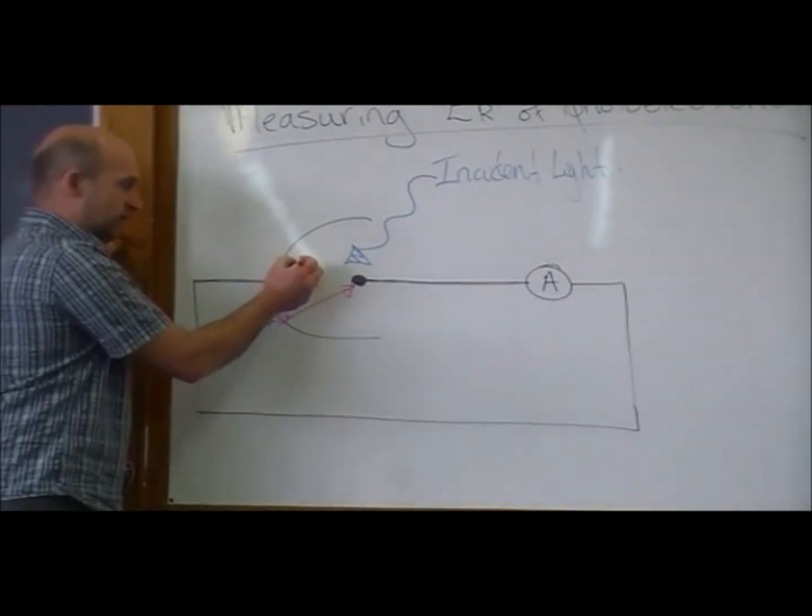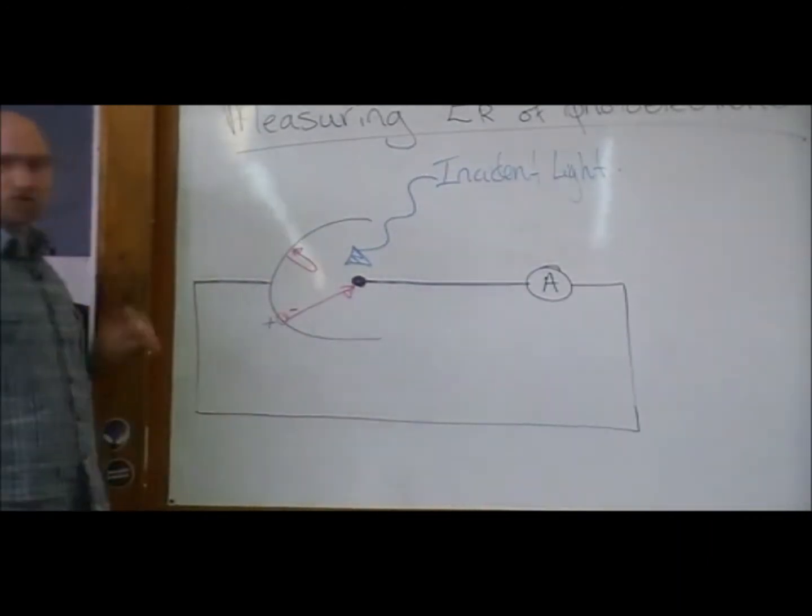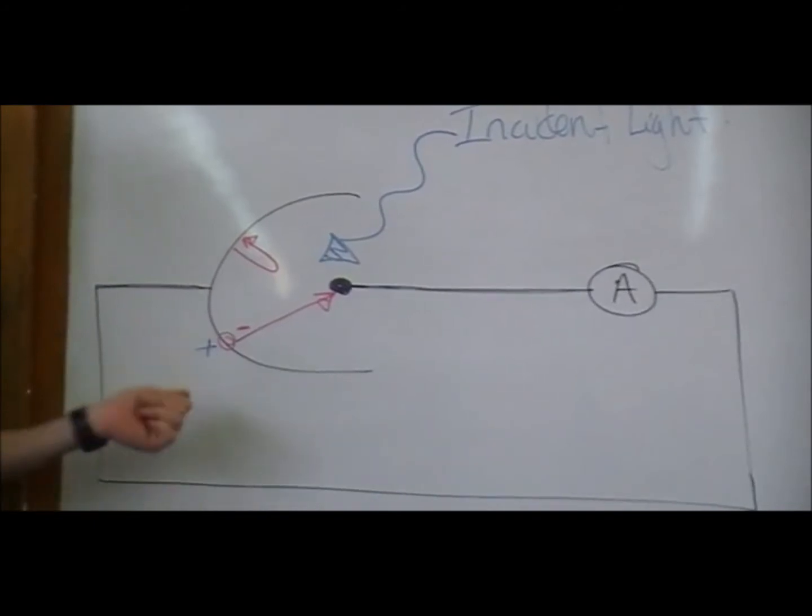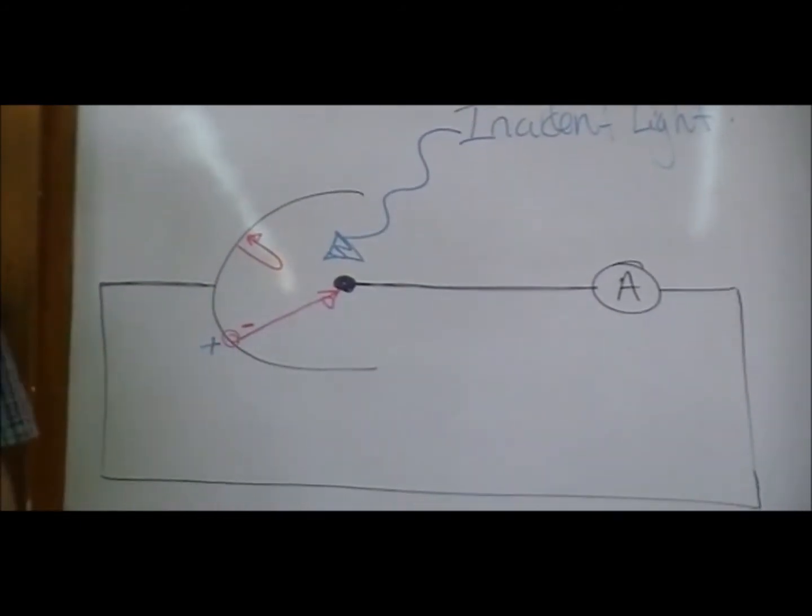There's a lot of electrons that get released and then they feel that positive charge and it turns them around before they even make it across the gap. So we're only counting the electrons that make it across the gap.